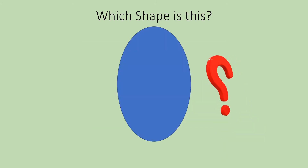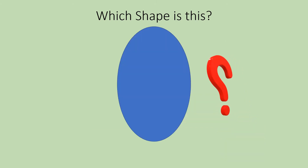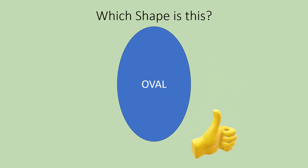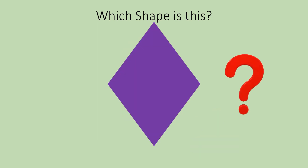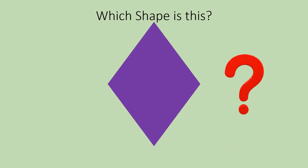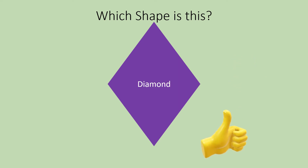Which shape is this? This is oval. Which shape is this? This is diamond.